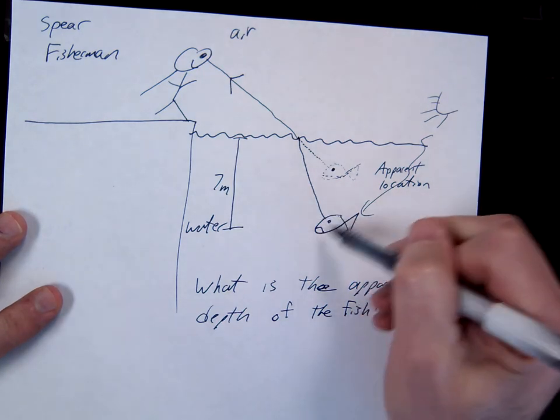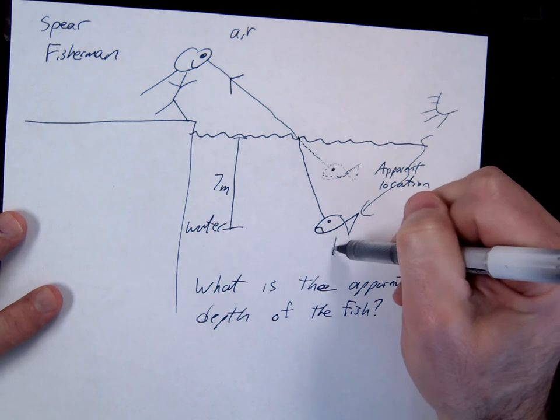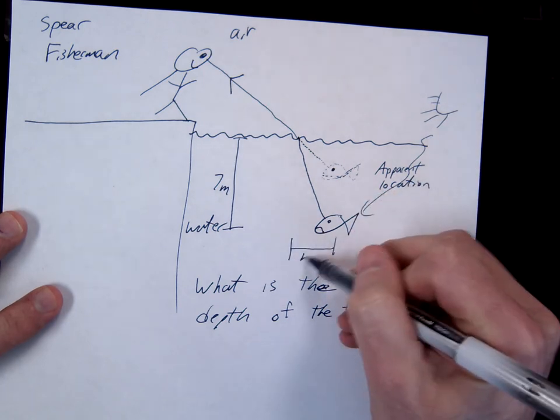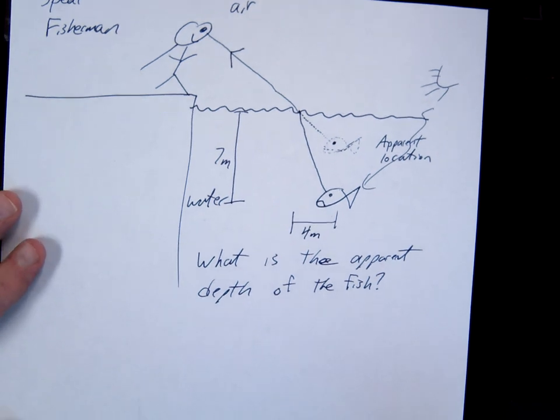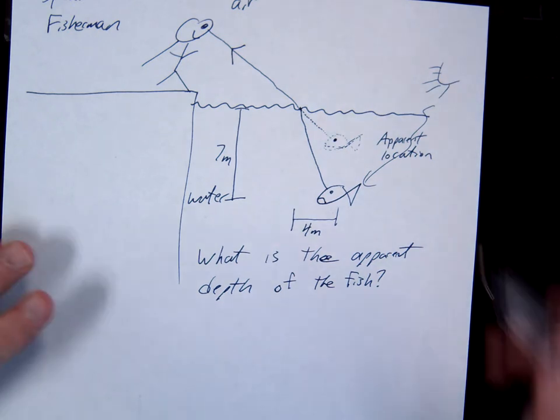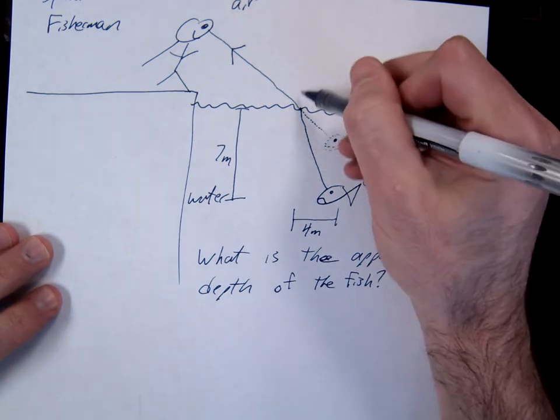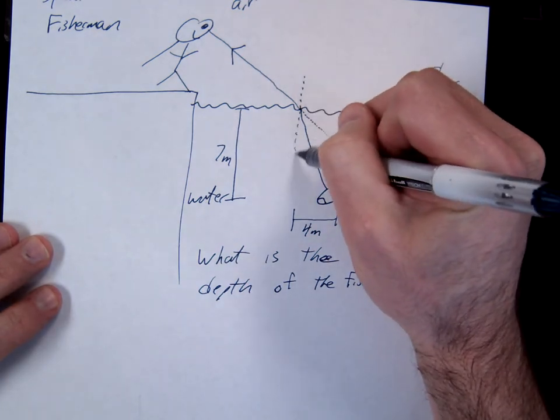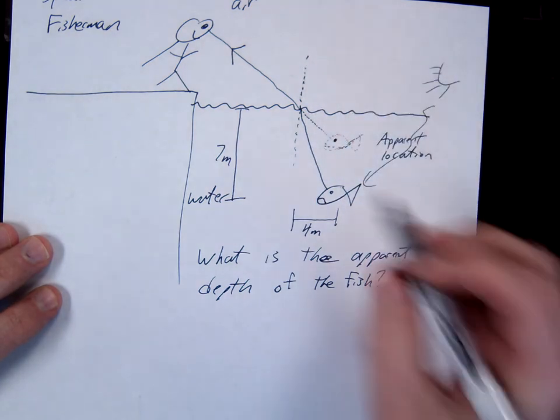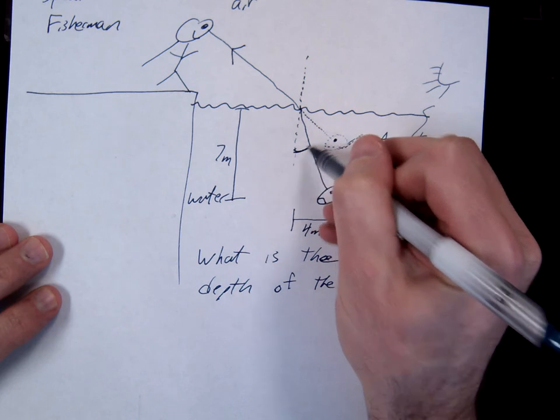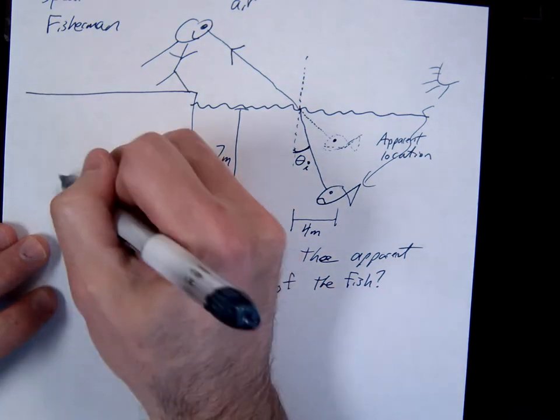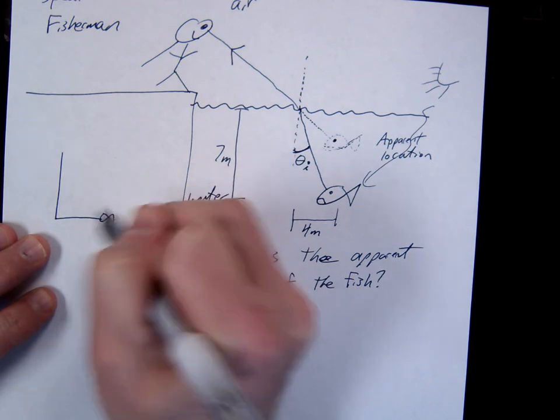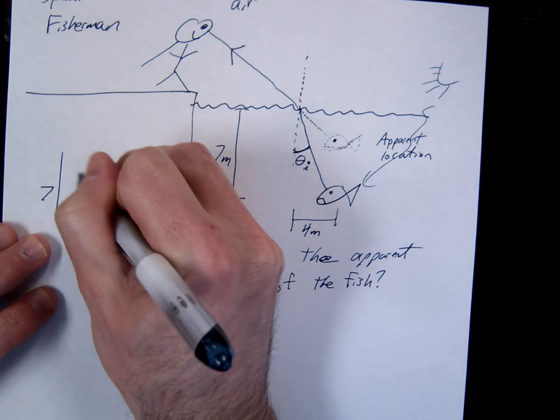So the true depth of the fish is 7 meters. Okay? Let's say the location between here and here when it exits is 4 meters. Okay, we're going to go ahead and solve this. So the first thing we do want to do, notice where it's bending, right? So we want to be able to do some Snell's Law. So here's my normal. I want to get to this angle first. This would be my incident angle, theta i. So notice I have a triangle here, right? This is my fish. This is 4. This is 7. I'm looking for this angle.